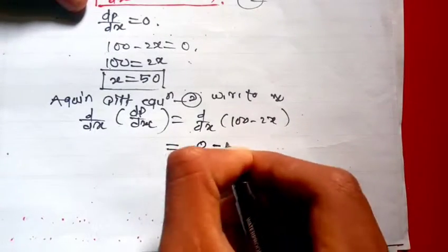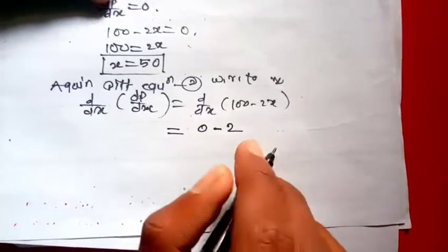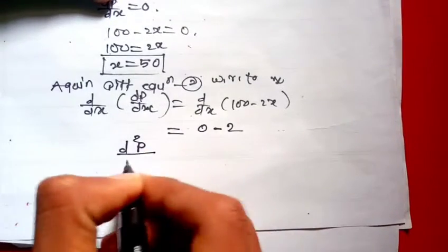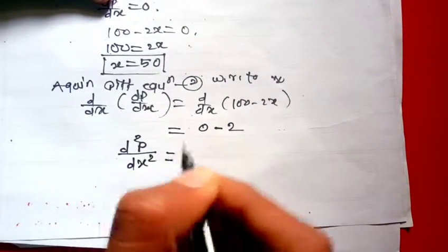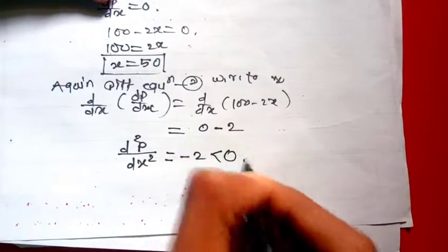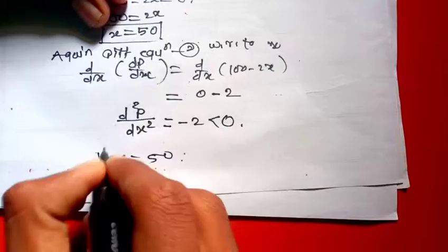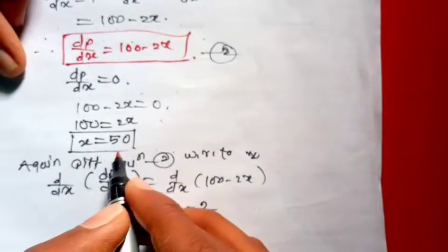100 minus 2X equals zero. So X is equal to 50.